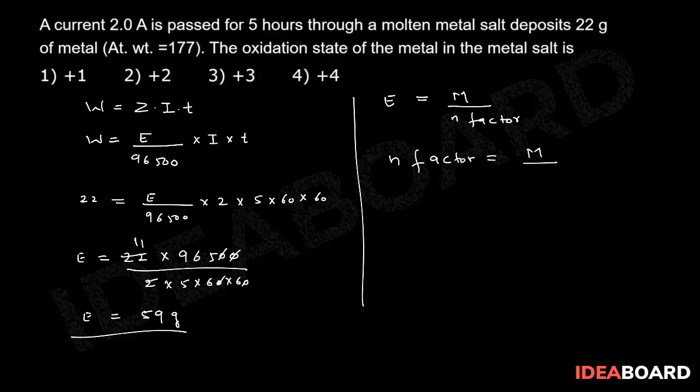N factor will be equal to molecular mass divided by equivalent mass. Molecular mass is 177 given in the question, and equivalent mass we have just calculated is 59 grams. So from this, if you calculate, this will get cancelled 3 times, so n factor is 3.